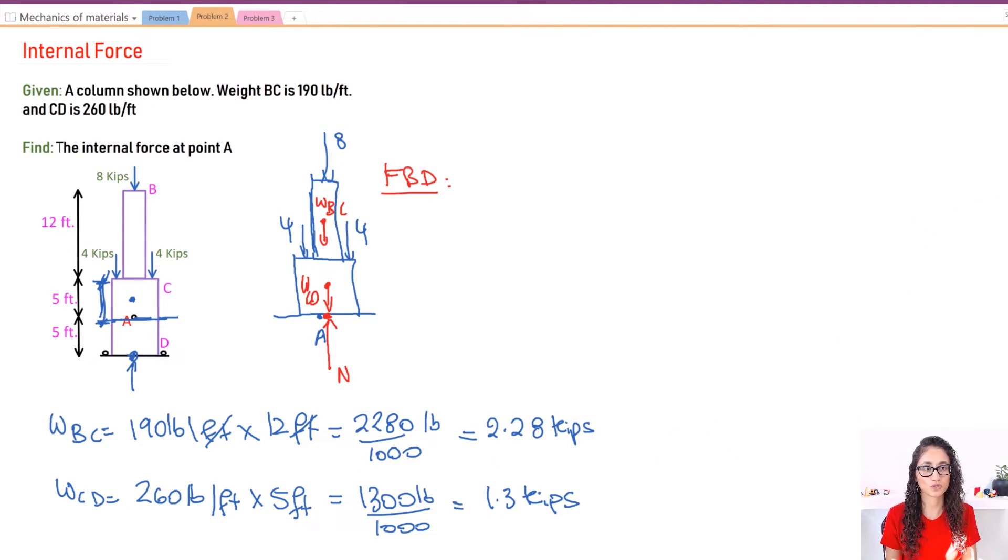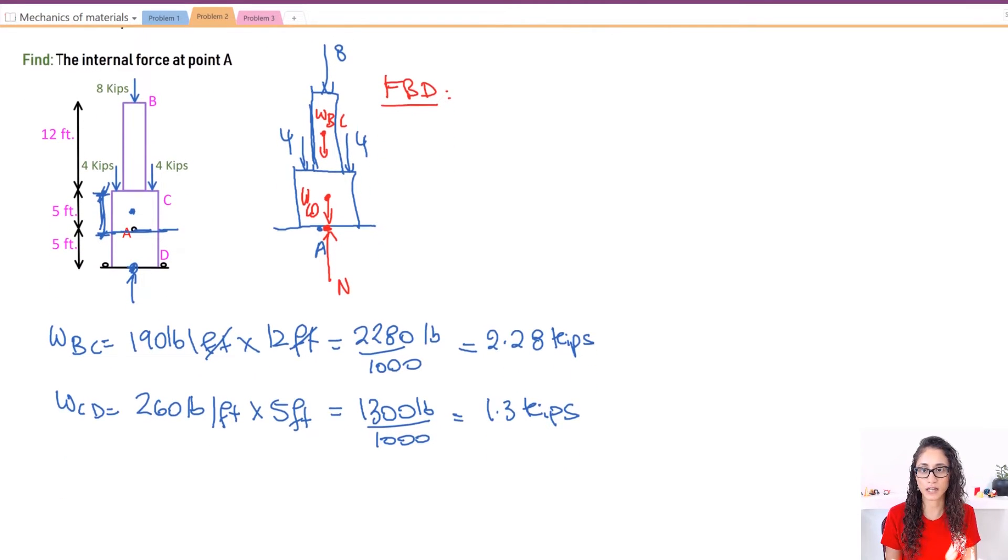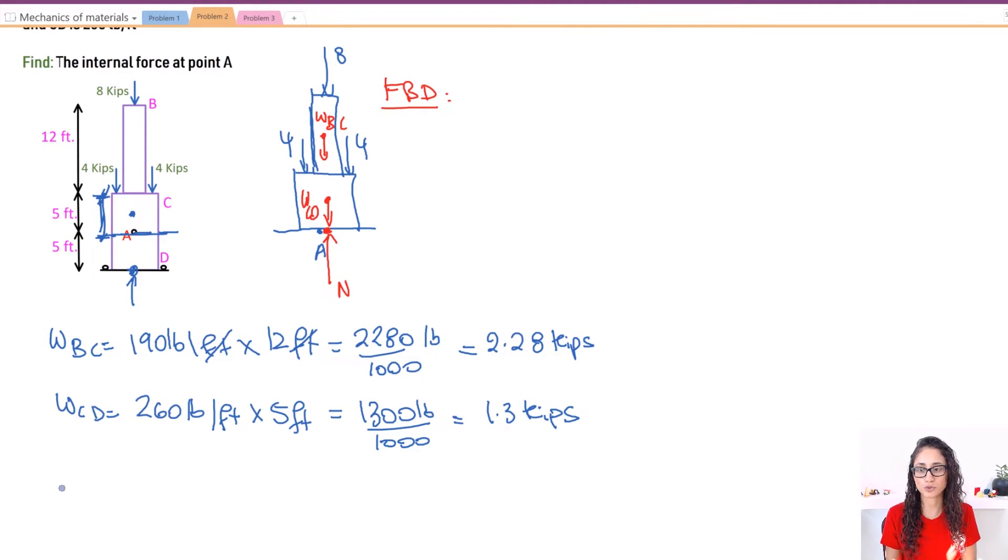We are ready to start calculating for the N force. So what we're going to do is the summation of the forces on the y, and this is equal to zero because this thing is not moving. It's in equilibrium. We're trying to find the internal force at point A. So the summation of the forces on the y will actually give us this.